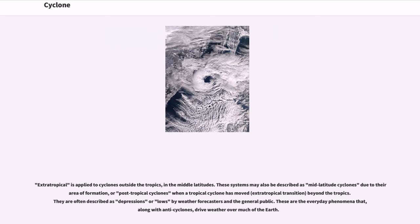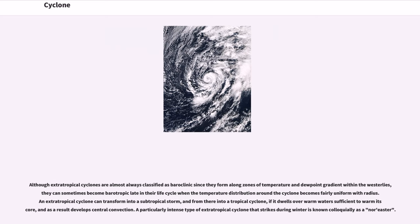These are the everyday phenomena that, along with anticyclones, drive weather over much of the earth. Although extratropical cyclones are almost always classified as baroclinic since they form along zones of temperature and dew point gradient within the westerlies, they can sometimes become barotropic late in their life cycle when the temperature distribution around the cyclone becomes fairly uniform with radius. An extratropical cyclone can transform into a subtropical storm, and from there into a tropical cyclone, if it dwells over warm water sufficient to warm its core and develops central convection. A particularly intense type of extratropical cyclone that strikes during winter is known colloquially as a nor'easter.